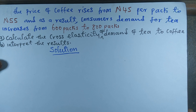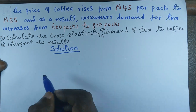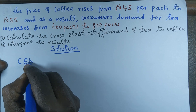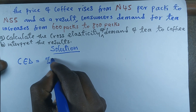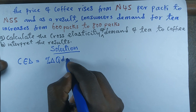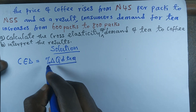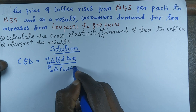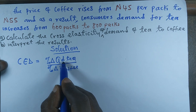For the solution, we are going to use the percentage method to calculate the cross elasticity of demand of tea to coffee. The cross elasticity of demand is equal to the percentage change in quantity demanded of tea divided by the percentage change in the price of coffee. So let's look for the percentage change in quantity demanded of tea.